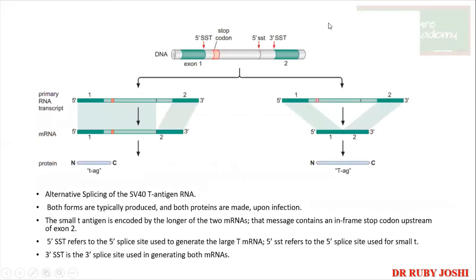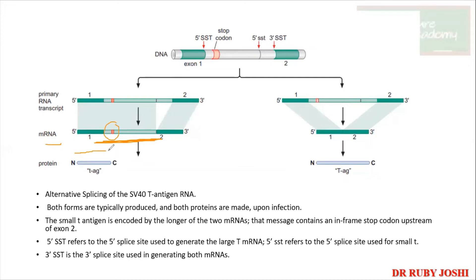Looking at the figure: the primary transcript has exon 1, an intron region, and exon 2, with a stop codon present. The small t antigen is encoded by the longer of the two mRNAs. If a portion of the intronic region is retained in the mRNA, and there is a stop codon within that retained intron, translation will stop early — producing only a small polypeptide, which is the small t antigen.